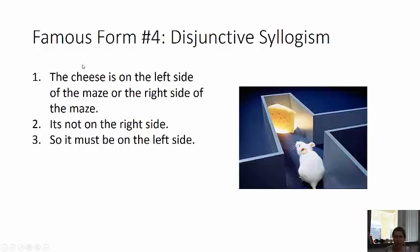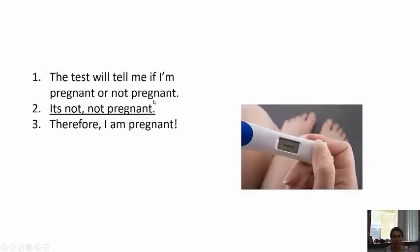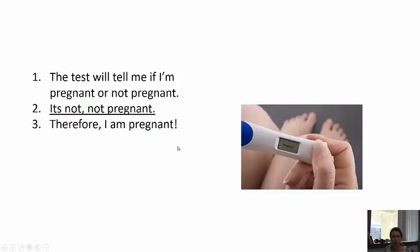The form is really easy. It says A or B, and then not A or not B — so one or the other — and then it rules out one side, therefore it must be the other. Here's another one: the test will tell me if I'm pregnant or not pregnant; it's not not-pregnant; therefore I am pregnant. Really simple, straightforward reasoning.